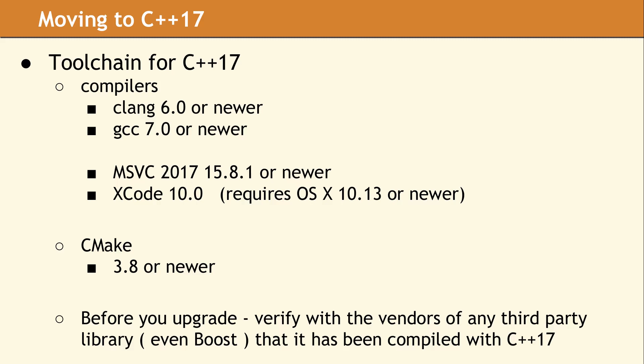In order to use the features of C++17, you will need a modern compiler such as Clang 6 or GCC 7. If you are using MSVC, you must update to at least version 2017 15.8.1, and on Apple platforms, Xcode version 10.0 or newer is required.